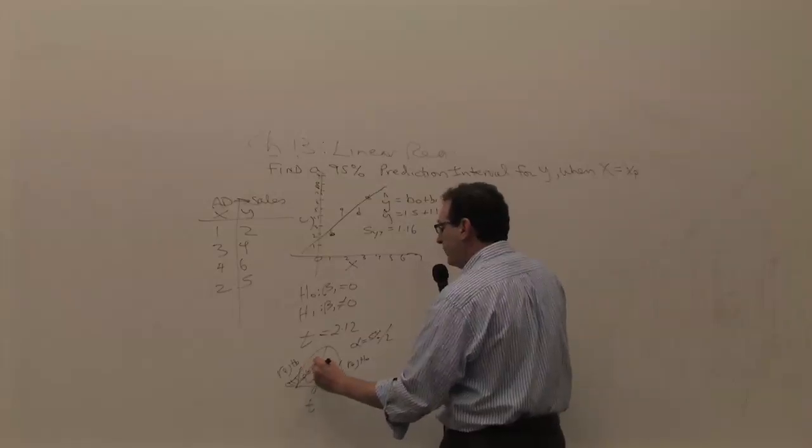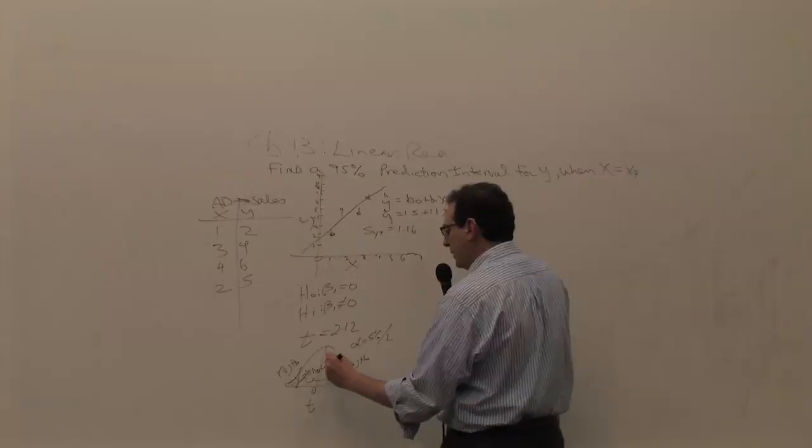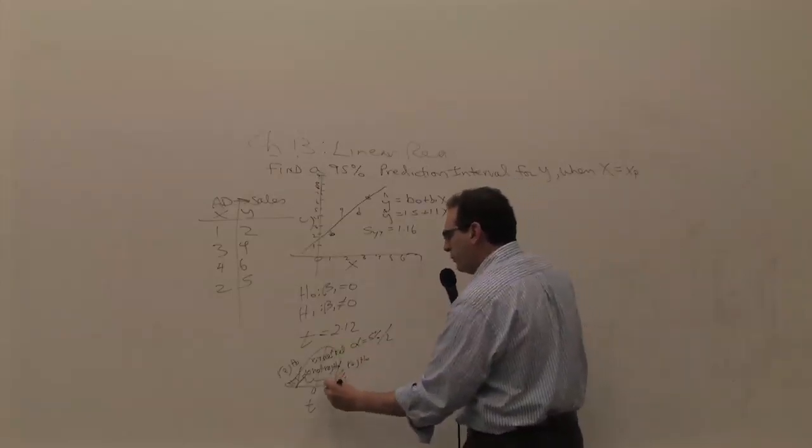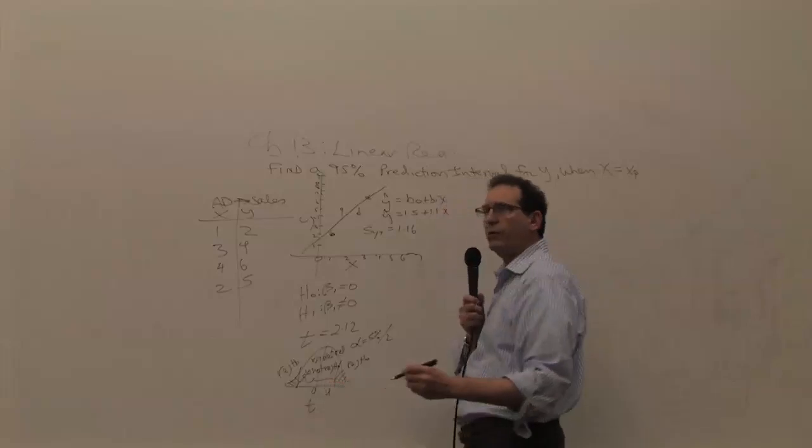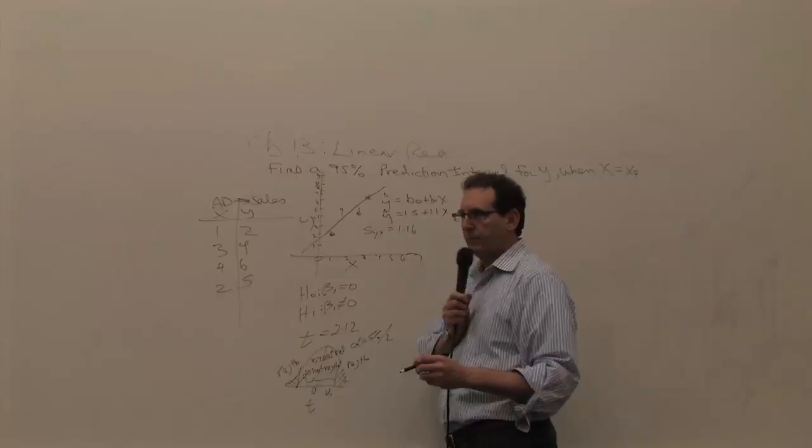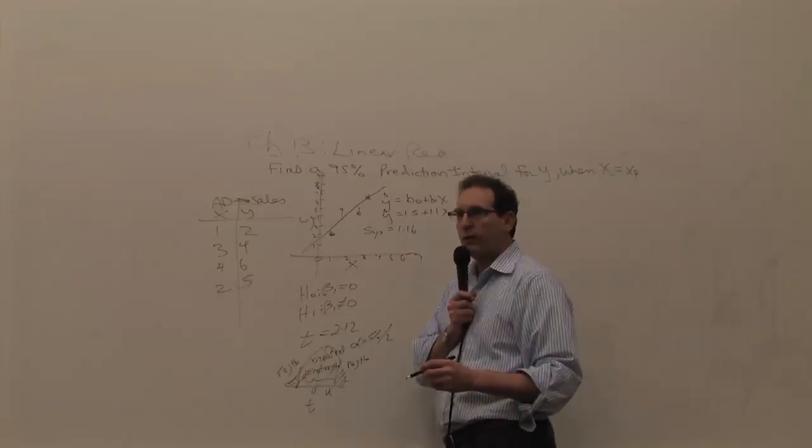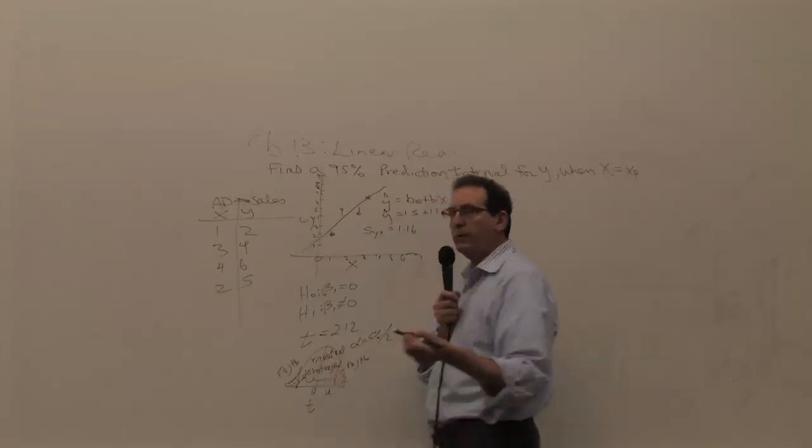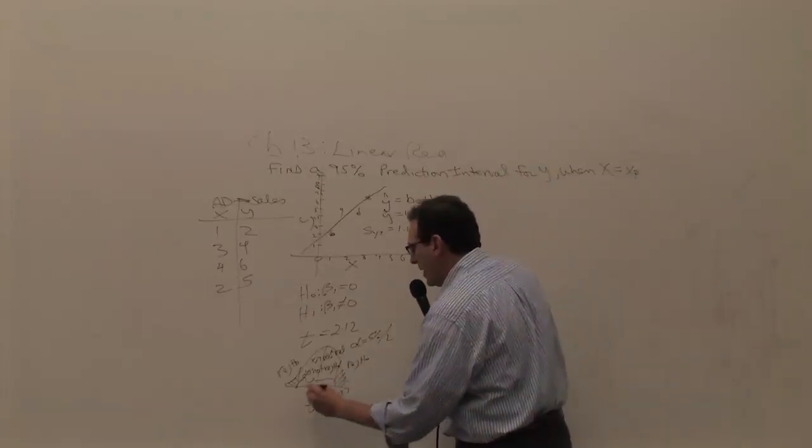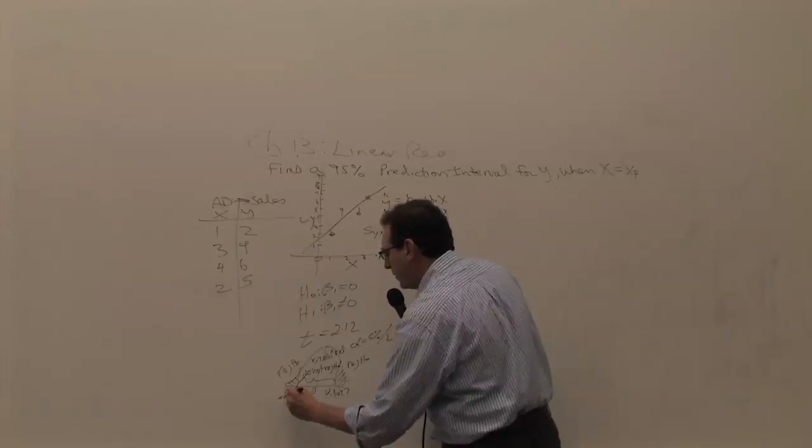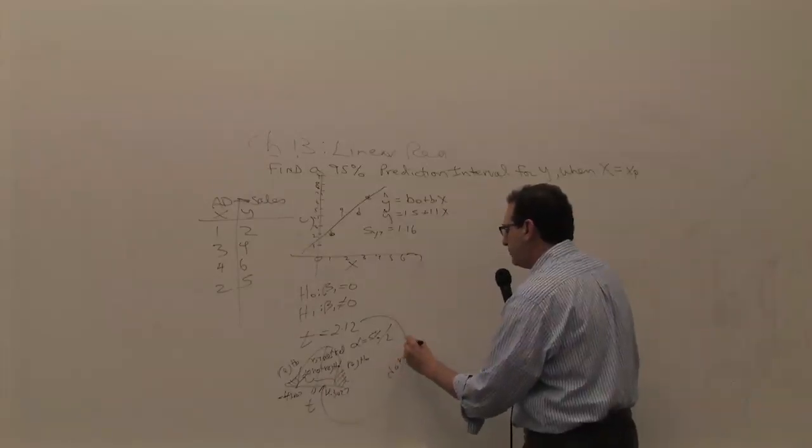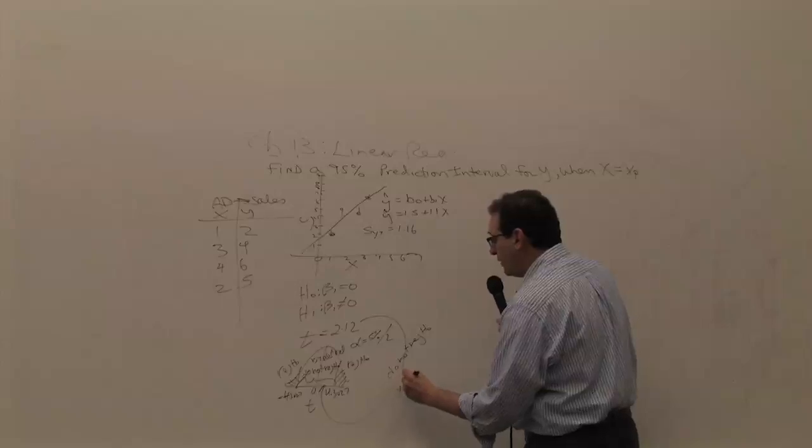Do not reject H0 which means x and y are not related. X and y not related. And I think the number we used was, remember, 4 minus 2 or 2 degrees of freedom was 4.302 or 4.03 or what was the number? 4.30. What was it? Yeah, 4.30. Let's put down the exact number already. 4.3027. Thank you, Gina. And minus 4. And since the number here was in the accept region, do not reject H0 or x and y or advertising and sales are not related.